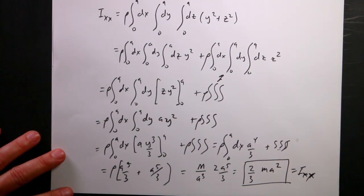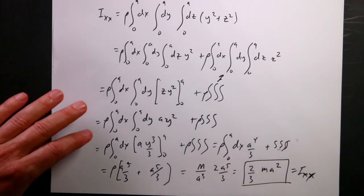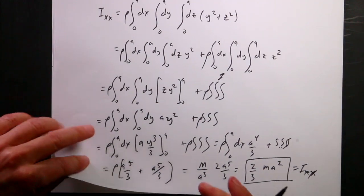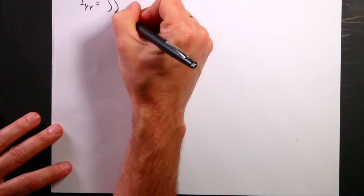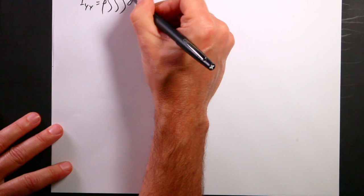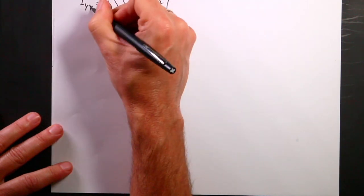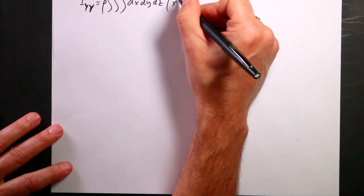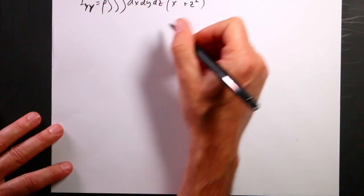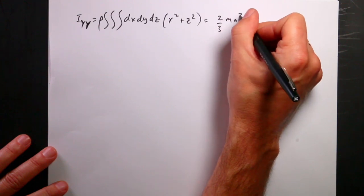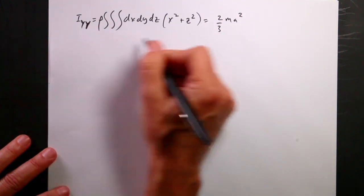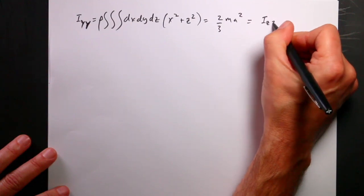That's Ixx done. For Iyy, it's the same process — just x² + z² in the integrand — and I get (2/3)ma² again. By symmetry of the cube with uniform density, Izz is also (2/3)ma².